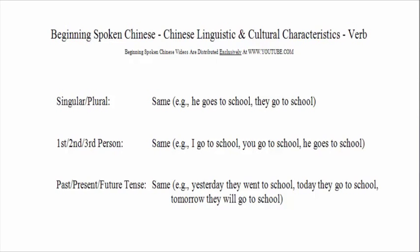Additionally, there is no tense for verbs in Chinese. That means the past, future, and present tense are all the same. For the verb 去, which means go in Chinese, you use the same word 去 in all situations.